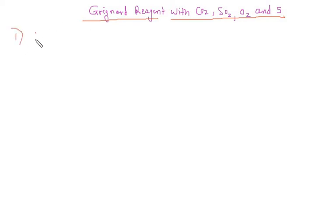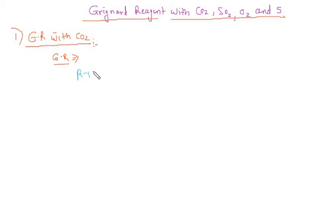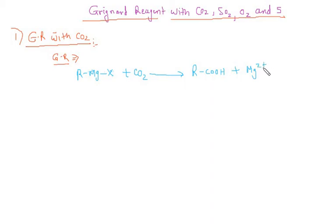We will study the reaction of Grignard reagent with CO2. So let's see the general reaction first. This is our Grignard reagent RMgX, which reacts with CO2 and we get carboxylic acid, and our by-product Mg2+ X- in solution form.